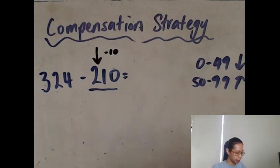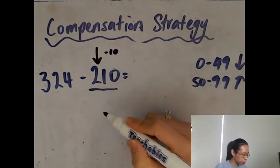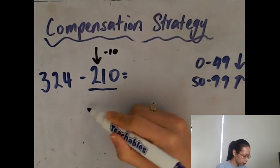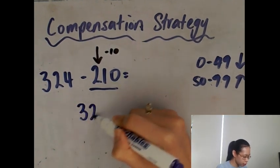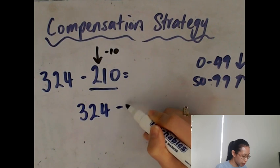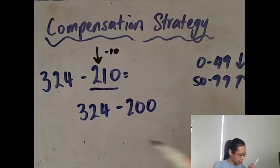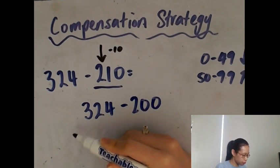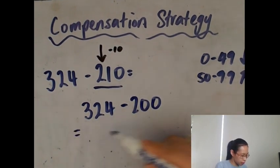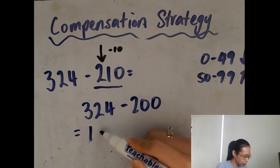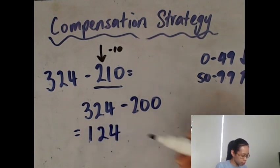I'll rewrite this again so that it will look like 324 minus 200. That is much easier to do, and the answer to that is 124.